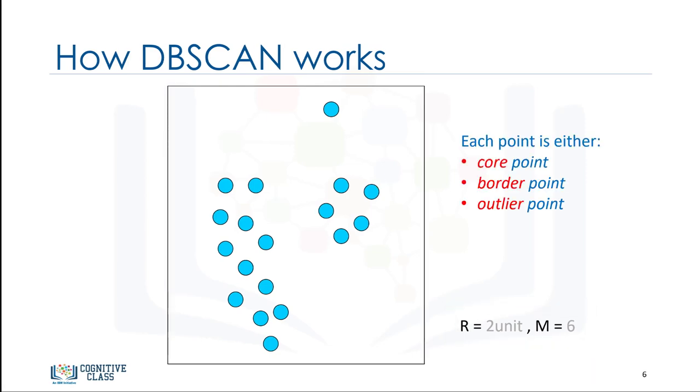To see how DBSCAN works, we have to determine the type of points. Each point in our dataset can be either a core, border, or outlier point. The whole idea behind the DBSCAN algorithm is to visit each point and find its type first. Then we group points as clusters based on their types.